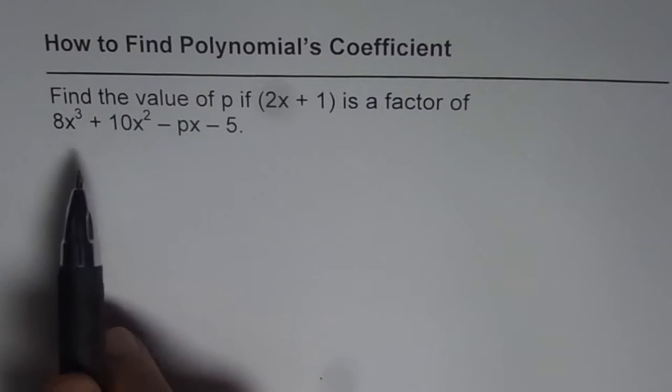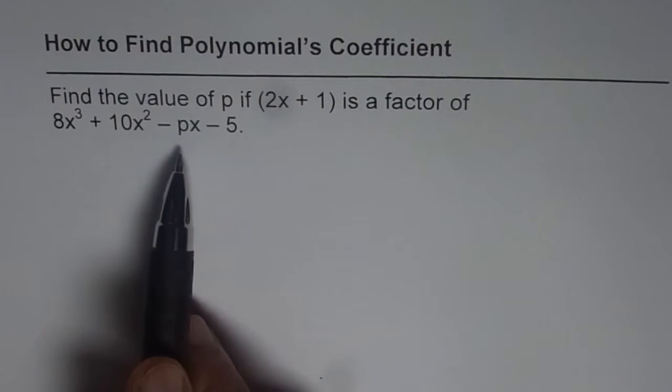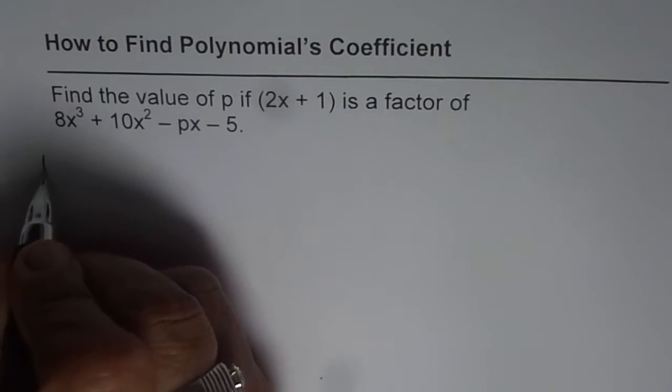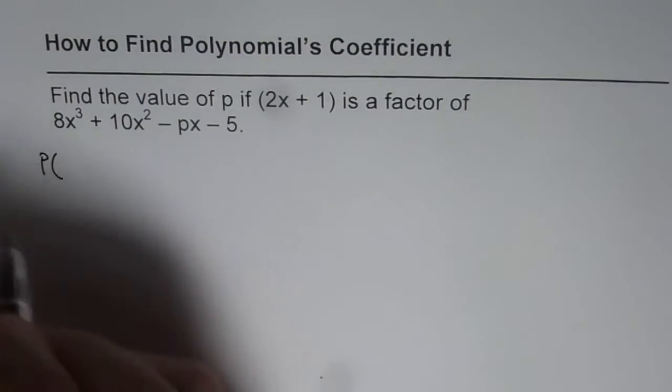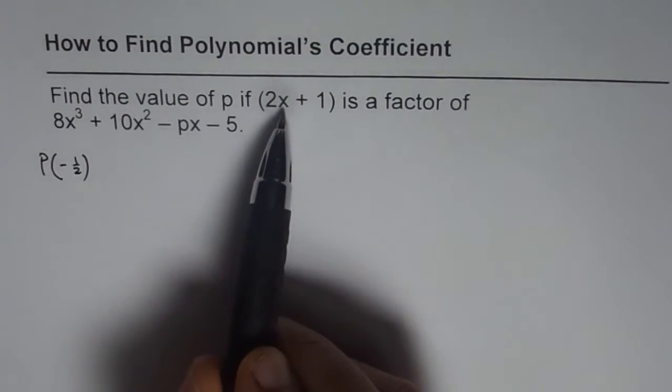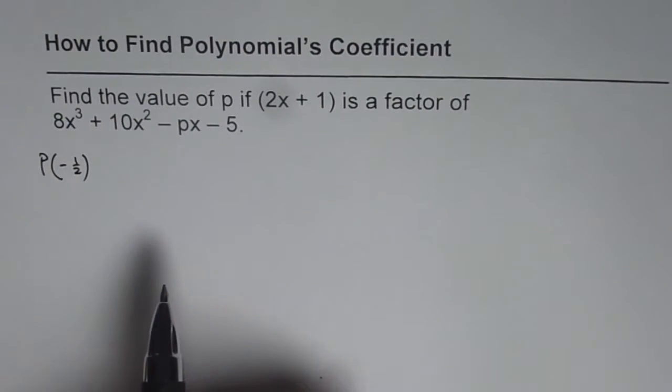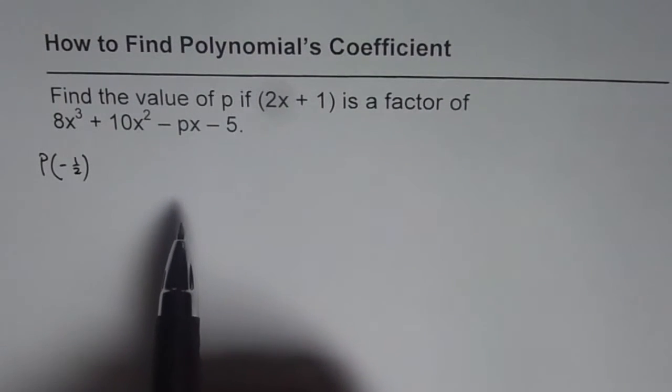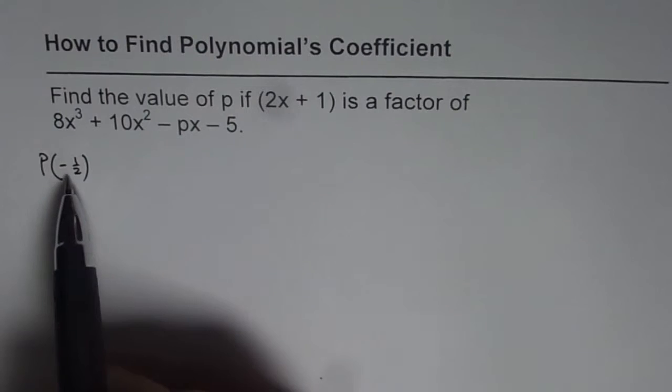Now if 2x plus 1 is a factor of this polynomial, then what should be the value of p of, in this case, minus half? Why minus half? If I put x as minus half, I will get this as 0. So that means I have a 0 at minus half.